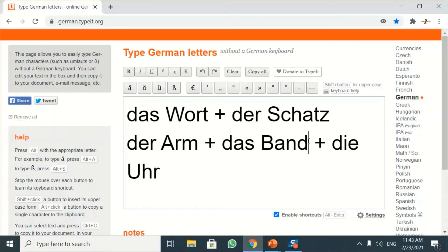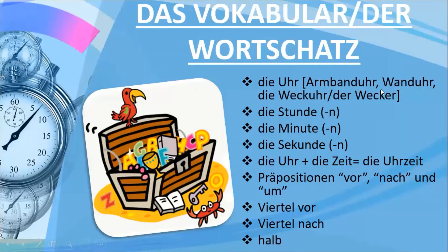So any clock or watch that you put on the arm or wrist becomes the wrist watch — 'die Armbanduhr'. We also have 'die Wanduhr', which is the clock that you put on 'die Wand', and 'die Wand' means the wall.